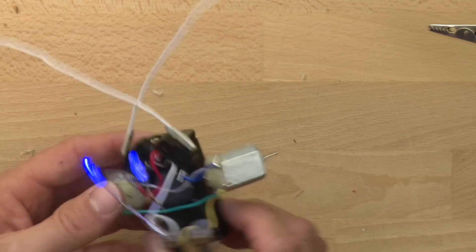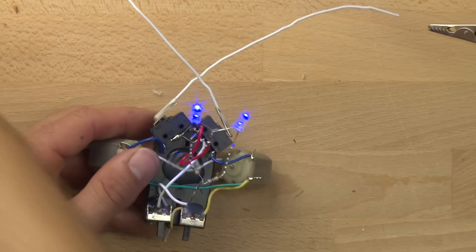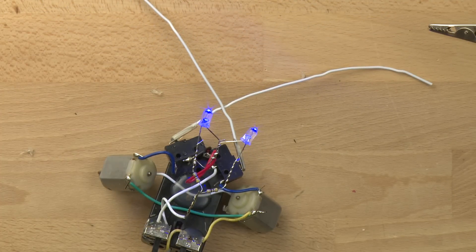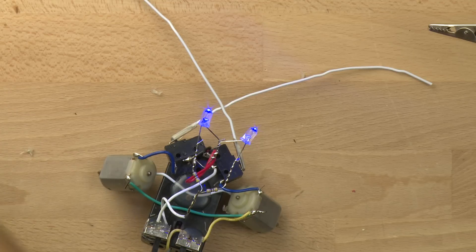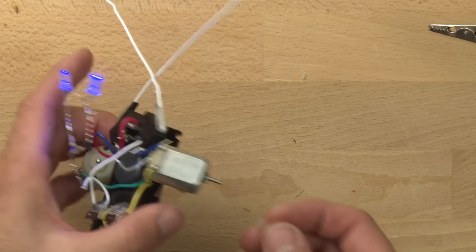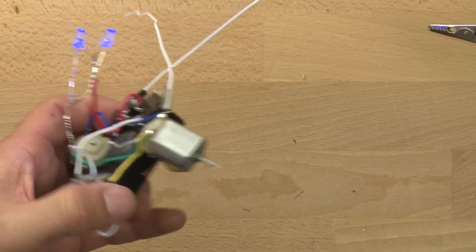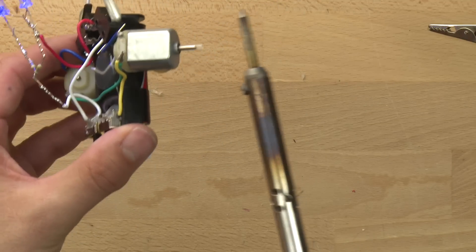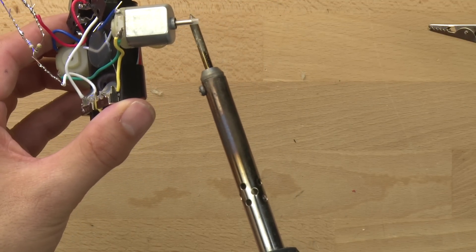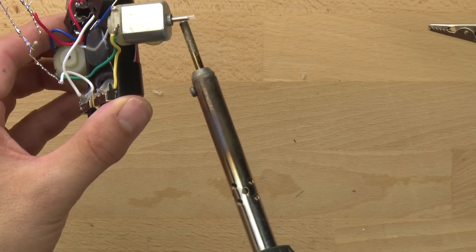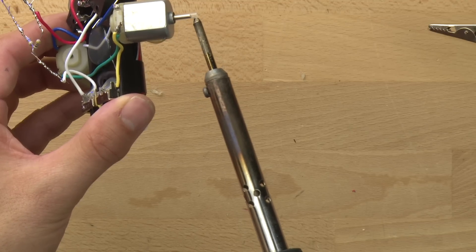You can also put some heat shrink tubing on the feet to get them to have a little more grip. And so we're going to do that. I've got a little tubing here like this. And you can use a heat gun or you can put your soldering iron next to the tubing. And it should help to shrink it up.